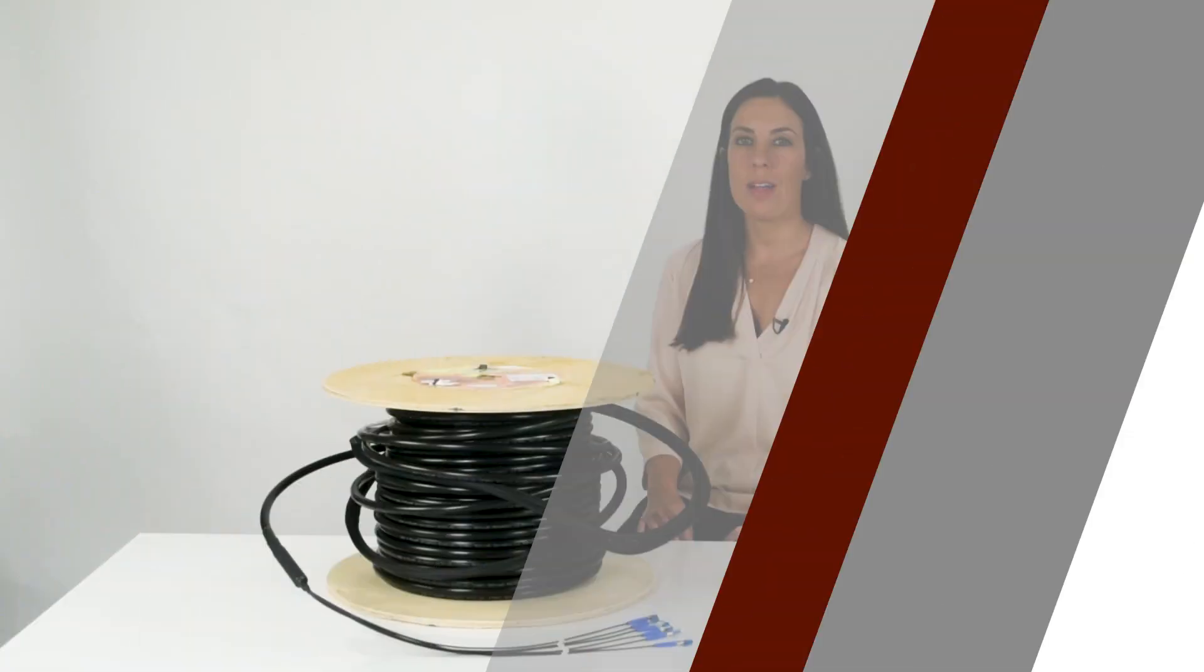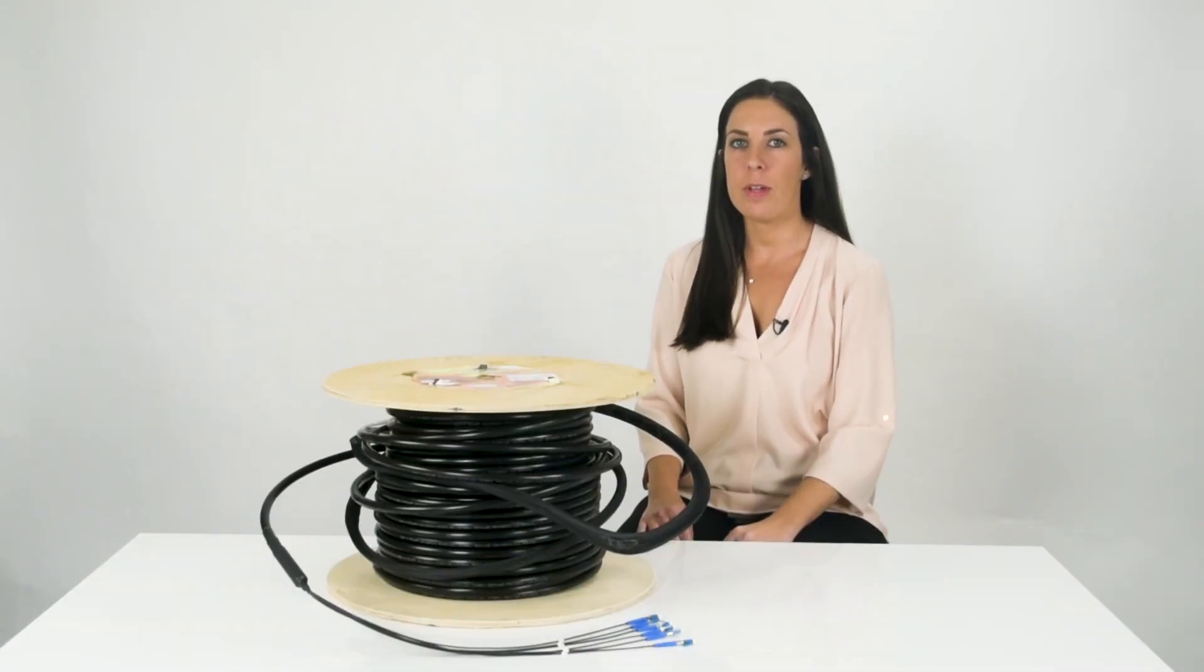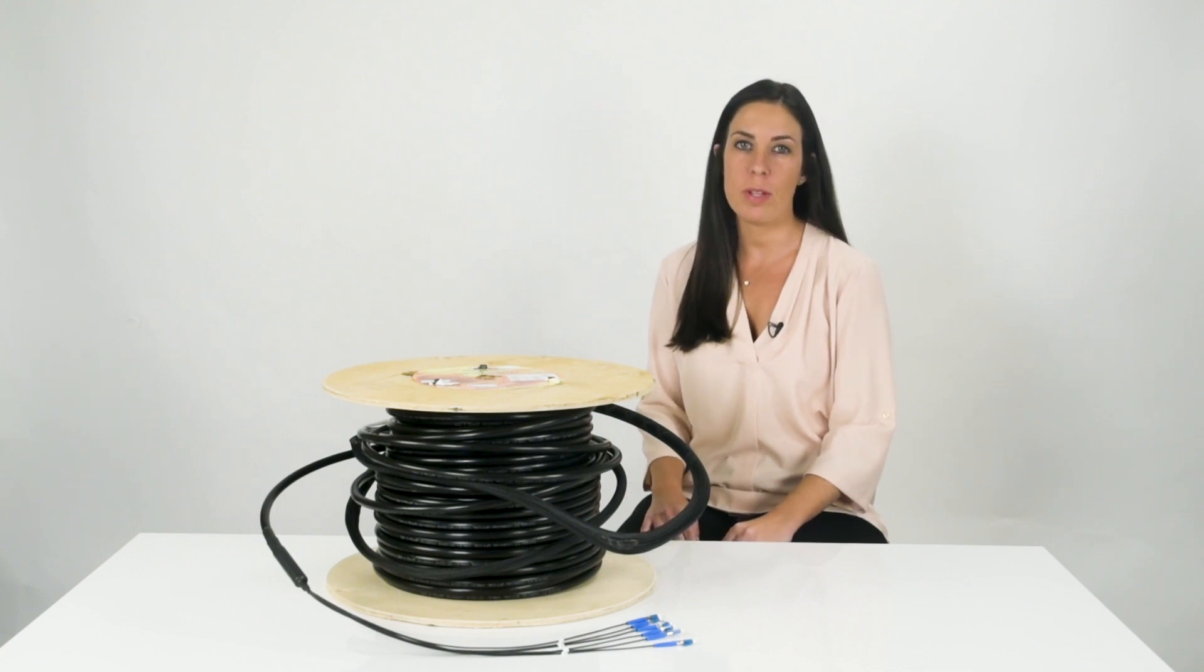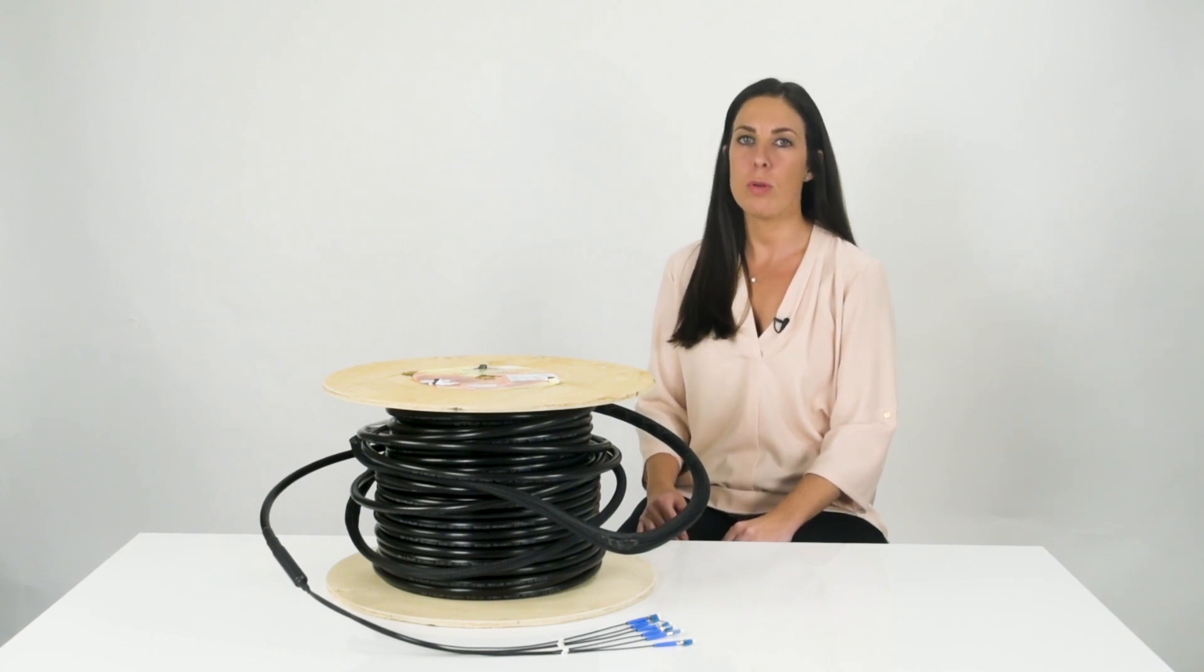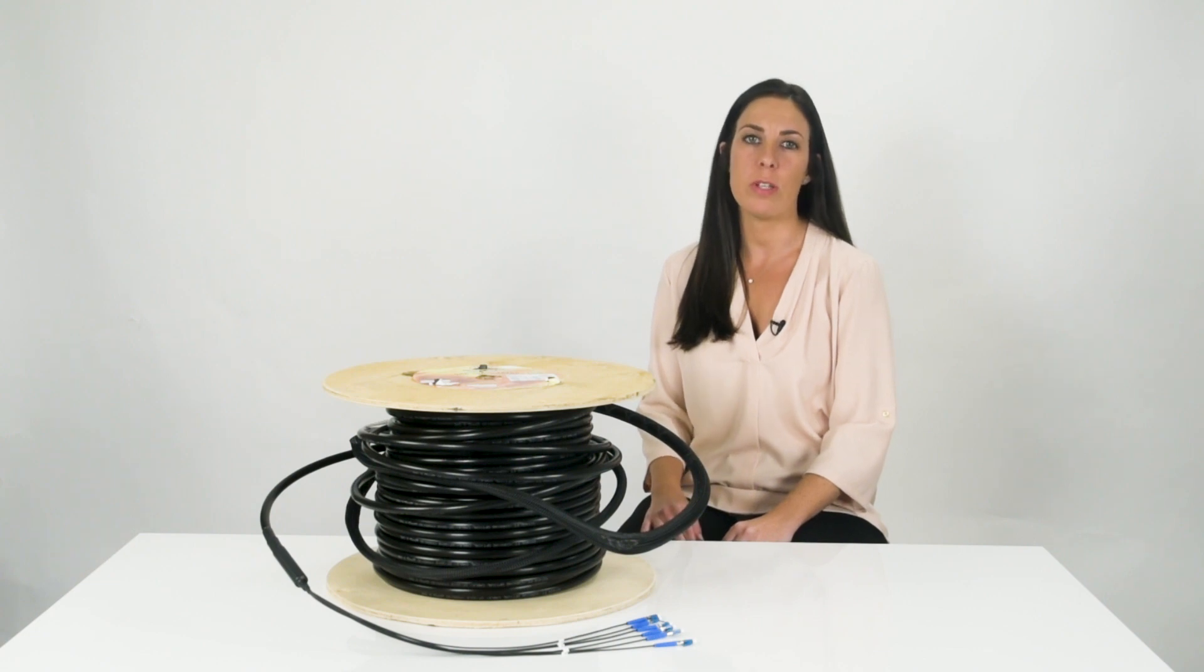One question we get a lot is, is there a specific depth I need to be aware of when directly burying my fiber optic assembly? The depth of fiber cables should be buried is determined by the soil conditions and surface usage. Typically, fiber cables in most areas are installed three to four feet deep.